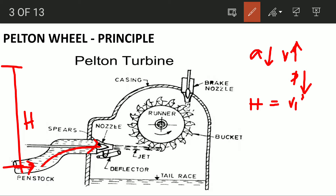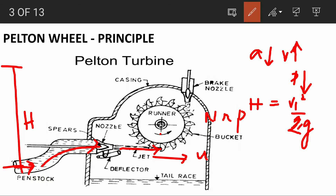V1 squared divided by 2G — that is the kinetic energy of the water. The potential energy is converted to kinetic energy. If water strikes the runner, there will be an impulsive force due to the high kinetic energy of the water. The runner will rotate with tangential velocity, u, and angular velocity.